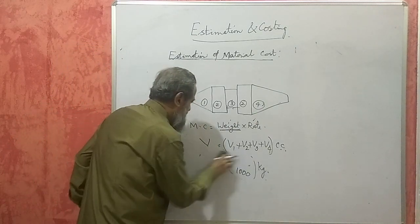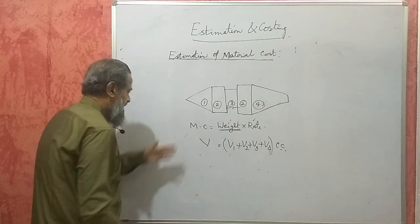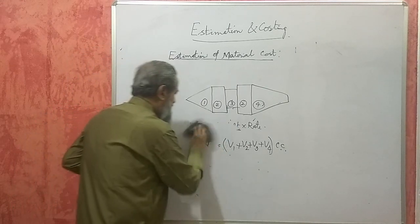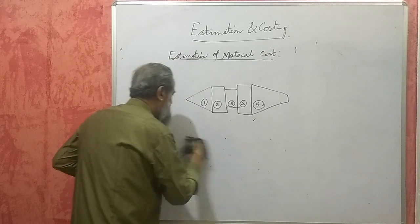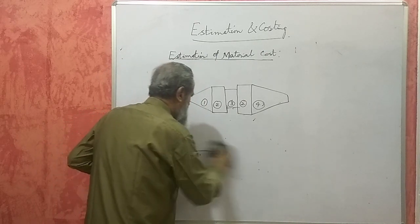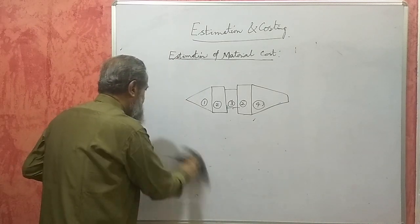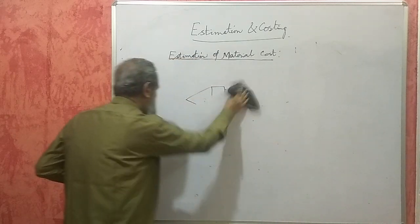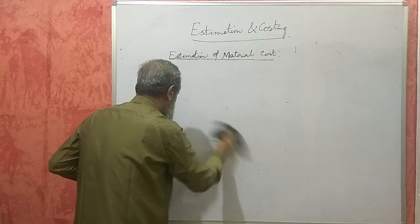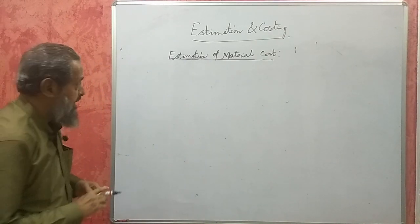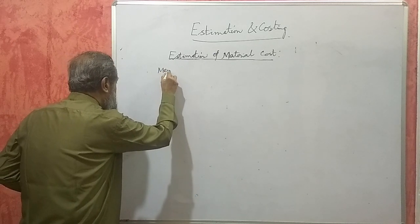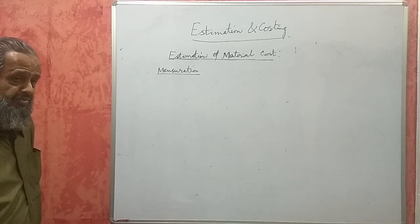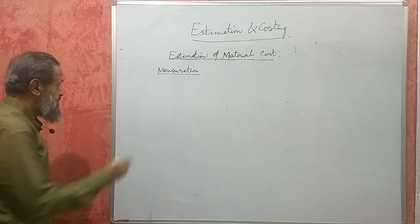Now, the problem here is finding these volumes. This finding of volumes and areas is taught to us in arithmetic, way back in primary school, which probably you might have forgotten. So, just to recollect it, I will once again refresh your memory. There is a chapter in arithmetic called mensuration, which deals with finding areas and volumes of different figures — plane figures and solids.